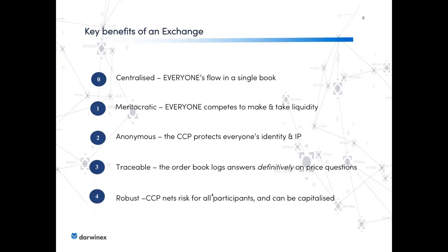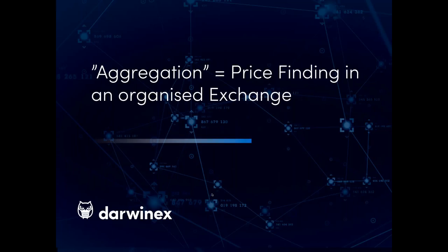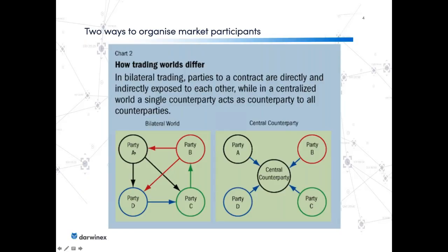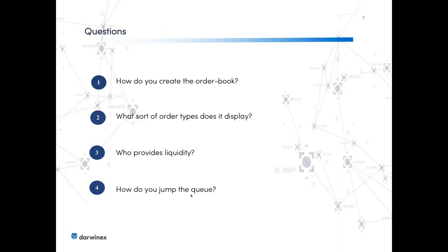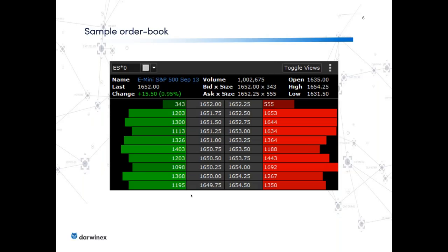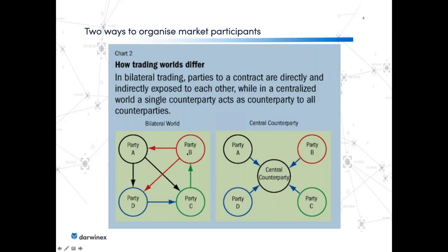Last but not least, it is robust: the central counterparty nets the risk for all participants. If A owes something to D and defaults, D might also default because it doesn't get what it's owed, causing C to default too — a chain reaction that spirals out of control. That cannot happen here because the central counterparty nets the exposure for everybody.